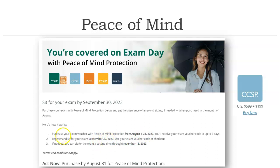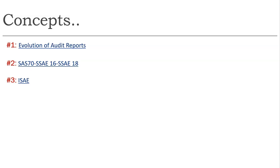If you need a reattempt, you can do a free reattempt by 15th November. ISC² conducts this activity periodically — sometimes they charge extra fees, sometimes they don't. This time the fee is $599 standard plus $1,099. It is always better to go with this offer because you sit the exam with a relaxed mind. Always go with the Peace of Mind promotional activity for CCSP, CISSP, SSCP, or other ISC² exams.